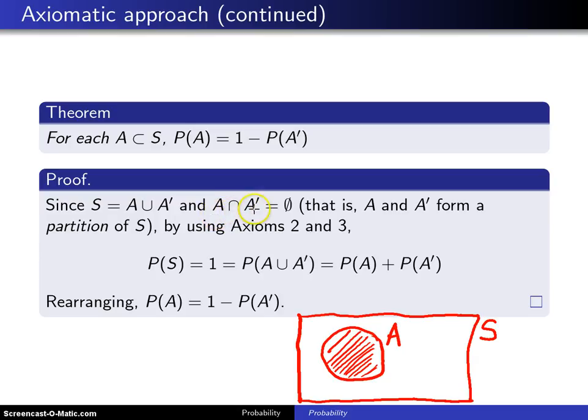And furthermore, since A intersect A prime is the null set, there is no overlap between A and what's outside of A, so that's the empty set. And as an aside here, this is the same as saying A and A prime form what is known as a partition of S.